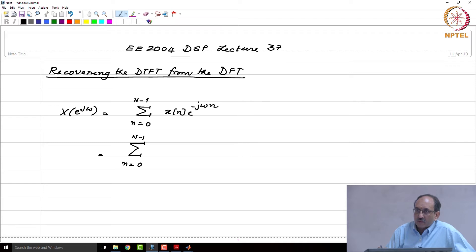To get capital X of k into the picture, you need to replace x of n by its inverse DFT. Therefore, this is nothing but 1 over N, k going from 0 to N minus 1, X of k, e to the j 2 pi k n by N, times e to the minus j omega n. And again there are no issues interchanging these two.